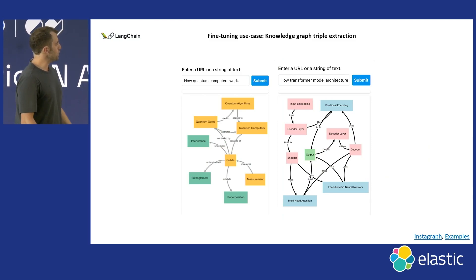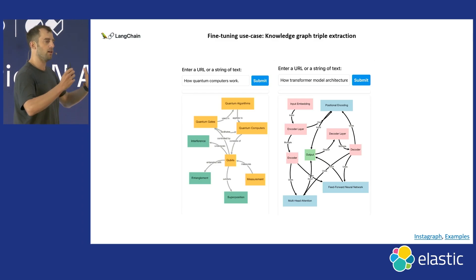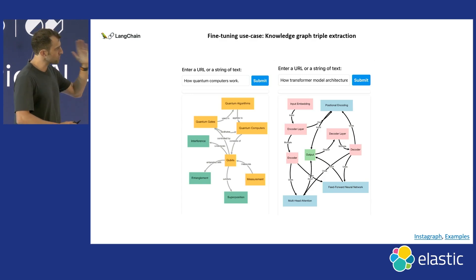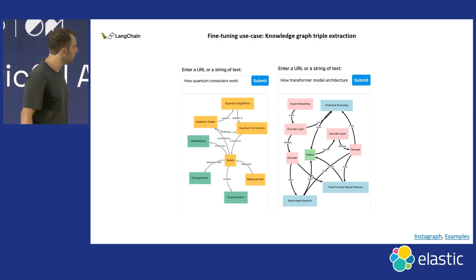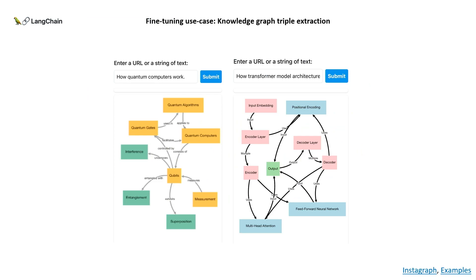We chose knowledge graph extraction as a test task — taking a chunk of text and extracting knowledge graph triples, which are subject-predicate-object triples. You can ask a question and retrieve these triples from a piece of text using an LLM, and we wanted to see if we could fine-tune LLMs to do this really effectively.